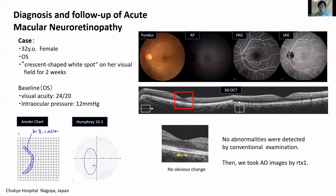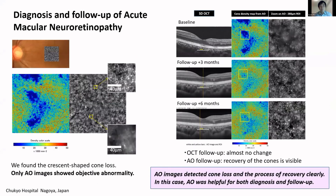Then we took AO images by the RTX1. We found an area in which cones had clearly decreased, and the shape was consistent with that of the Amsler chart. Only AO images showed objective abnormality, which led us to diagnose her as acute macular neuroretinopathy.